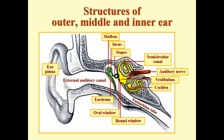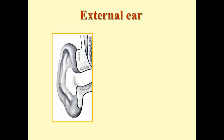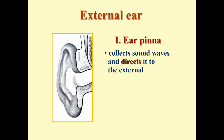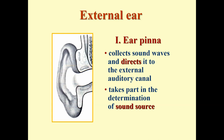The external ear's first part, the ear pinna, is not merely decorative. Its functions include: first, collection of sound waves and directing them into the external auditory canal — its complex shape contributes to sound quality and direction; and second, participation in determination of the location of the sound source.